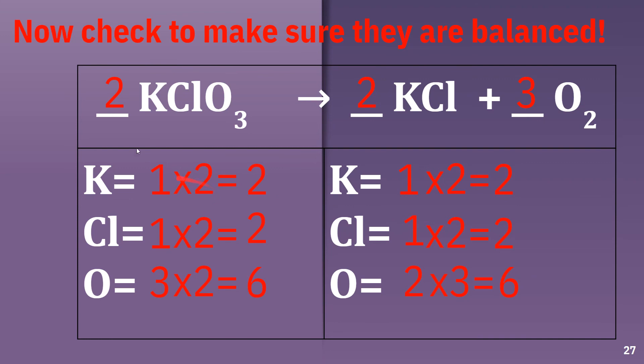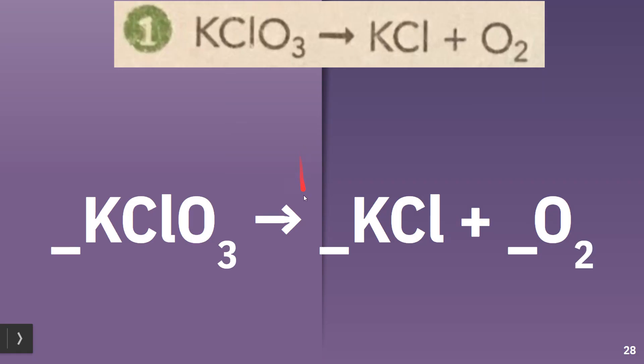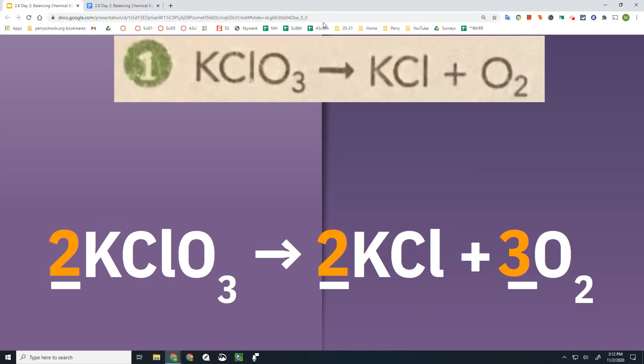All right, we're almost finished here. Now we've got to check to make sure they are balanced. So we're looking here. Potassium, there's 2 on each side, good. Chlorine, there's 2 on each side, good. And oxygen, there's 6 on each side. So this is a balanced chemical equation. And the last slide just shows you what your answer is. All right, we will do another one in just a minute.